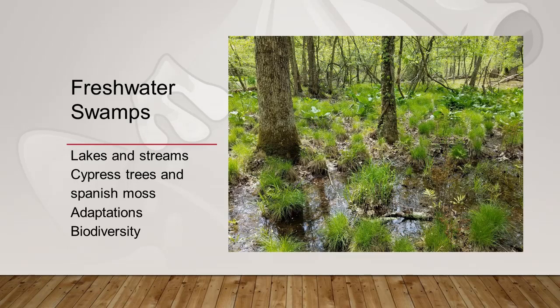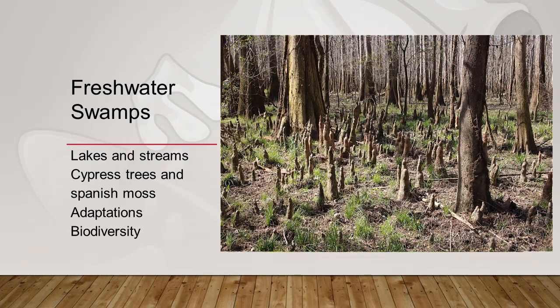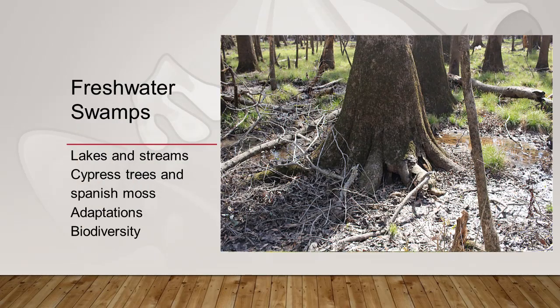First we'll talk about freshwater swamps, which form around freshwater systems like lakes and streams. Some freshwater swamps in the southeastern United States have cypress trees with Spanish moss hanging from the branches. Because these trees often exist in standing water, the tree's root system sometimes grows out of the water and looks like knees that can stand as tall as four meters — about 12 feet — out of the water. This is an adaptation that stabilizes the trees so they don't fall over. Trees in swamps sometimes also have fanned-out trunks at the base, which is another adaptation that allows the tree to stand upright, providing support through widened bases.